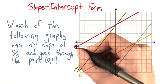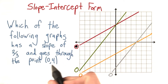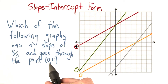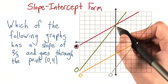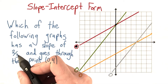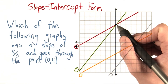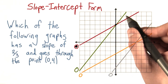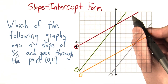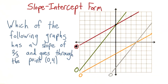And the correct answer is this one. It goes through the point 0, 4 — remember, 0 is the x-coordinate and 4 is the y. And the slope is 2 over 3, so that means it goes up 2 over 3. And so the pink line here is the only one that fits.